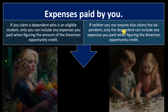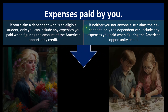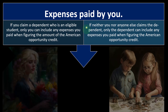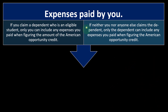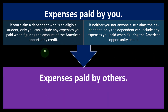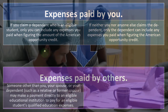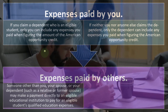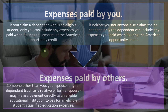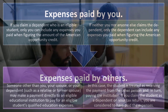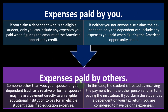If neither you nor anyone else claims the dependent, only the dependent can include any expenses paid when figuring the American Opportunity Credit. Regarding expenses paid by others: someone other than you, your spouse, or your dependents — such as a relative or former spouse — may make a payment directly to an eligible educational institution. In that case, the student is treated as receiving the payment from that other person and in turn paying the institution. If you claim the student as a dependent on your return, you are considered to have paid the expenses.